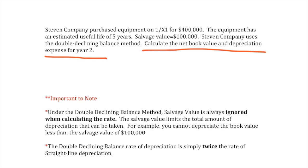you cannot depreciate the book value less than the salvage value of $100,000, which is indicated right here. We have a salvage value of $100,000. You can never go below $100,000. The double declining balance rate of depreciation is simply twice the rate of the straight line depreciation.